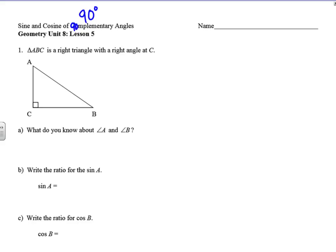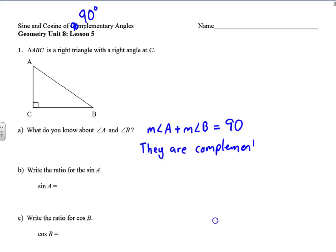We have a right triangle and in this right triangle, angle C is the right angle. What do we know about angles A and B? All the angles in a triangle add up to 180, so we know that the measure of angle A plus the measure of angle B also has to equal 90. Therefore they are complementary. The two acute angles in a right triangle are always going to be complementary.